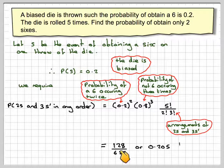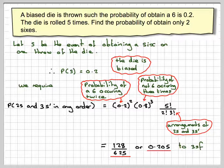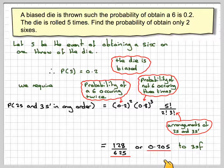So that gives 128 over 625, or as a decimal equivalent, 0.205 to three significant figures.